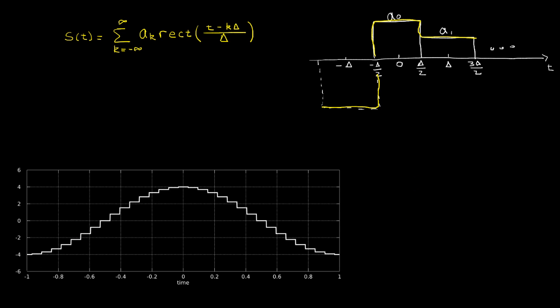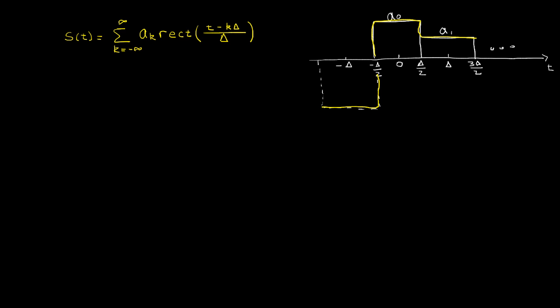Now, in this case, we've made delta equal to 1/64th of a second. And once again, a k is 4 times the cosine of 2 pi k times delta over 2.